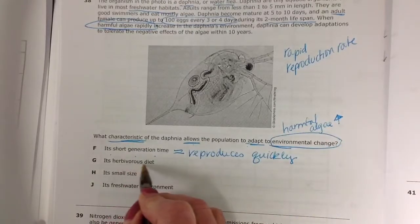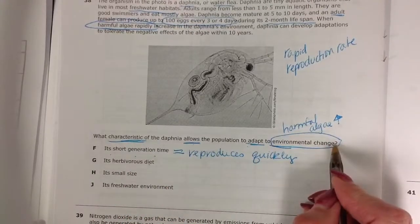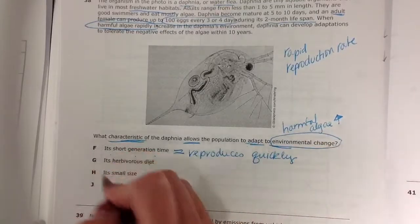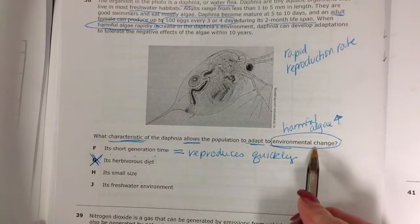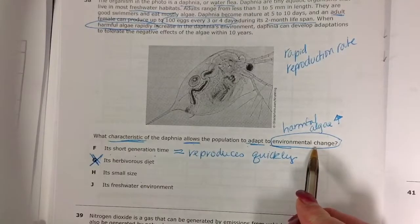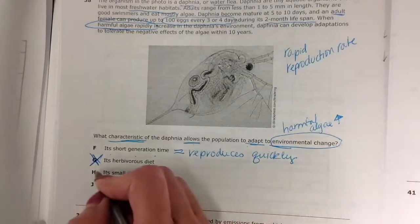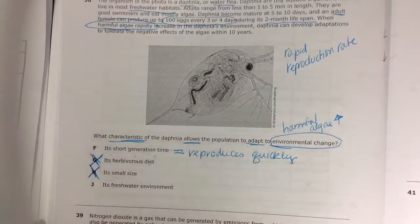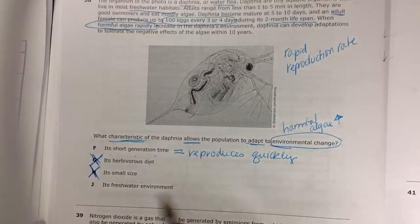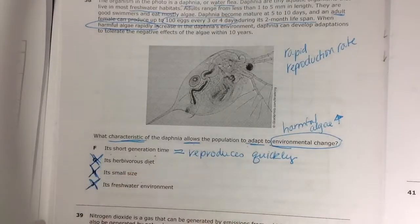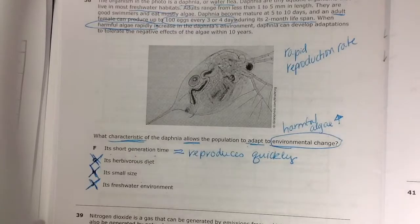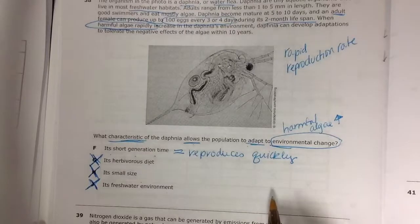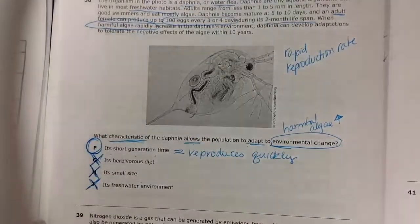It's herbivorous diet, meaning it eats only green. Well, that wouldn't protect it from the harmful algae. It's small size has nothing to do with how it adapts to the harmful algae increase. And it's freshwater environment is just where the algae and the Daphnia live. That is their home. So the only thing that could help it adapt and adaptations take a while, but in organisms that reproduce so rapidly, it goes quickly. So we're going to go with.